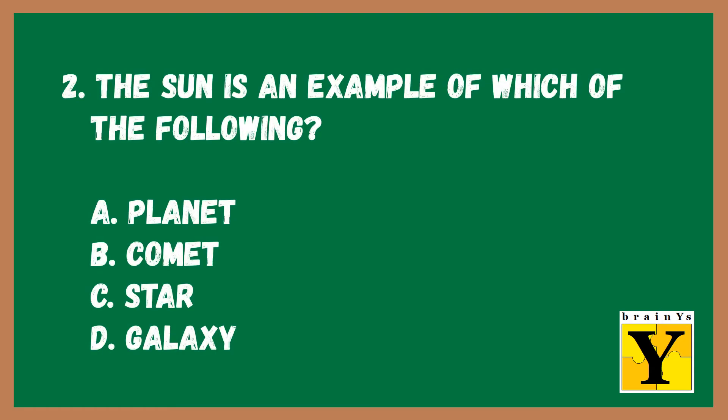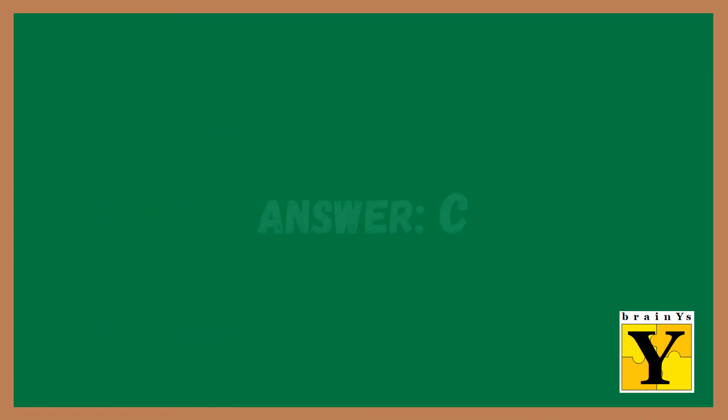Number two: The sun is an example of which of the following? A. Planet, B. Comet, C. Star, D. Galaxy. The answer is C.